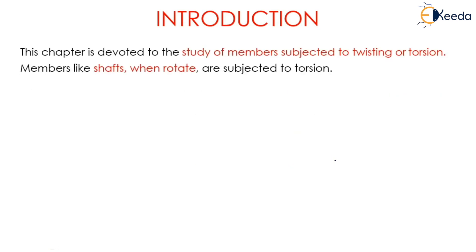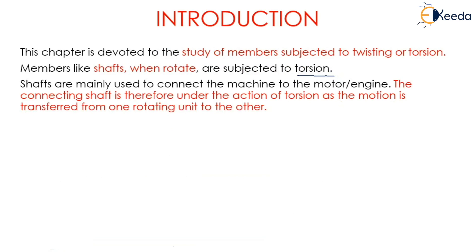Let's start with the introduction and learn what is meant by torsion. This chapter is devoted to the study of members subjected to twisting or torsion. Members like shafts, when they rotate, are subjected to torsion. Shafts are mainly used to connect the machine to the motor or engine. The connecting shaft is therefore under the action of torsion as the motion is transferred from one rotating unit to the other.